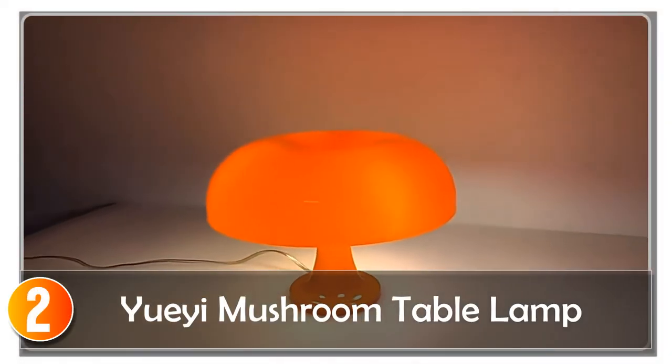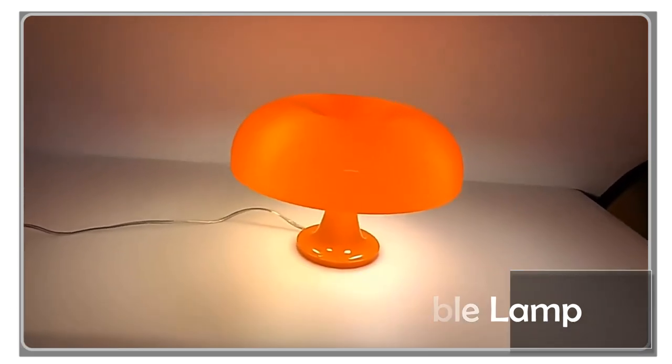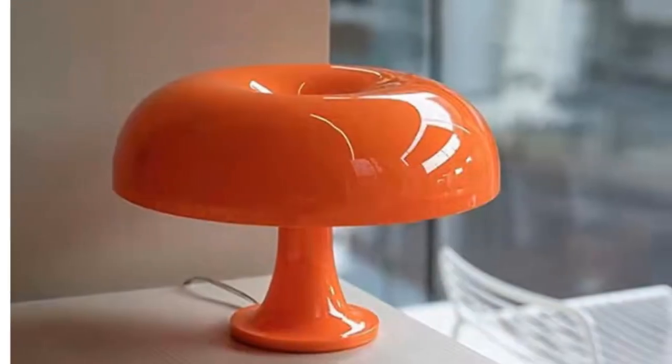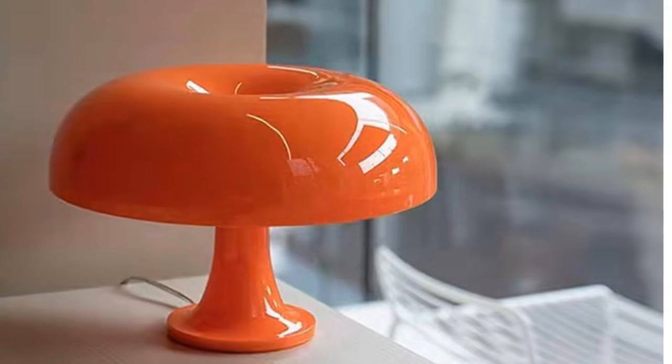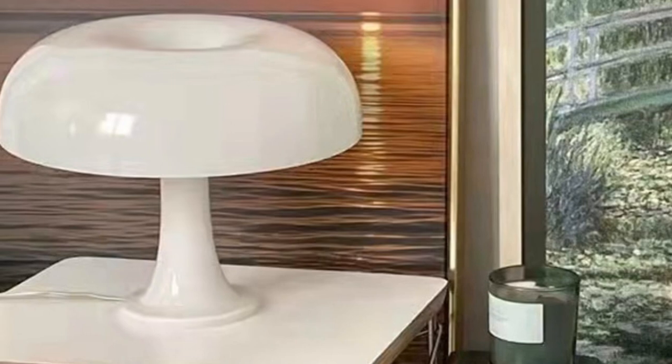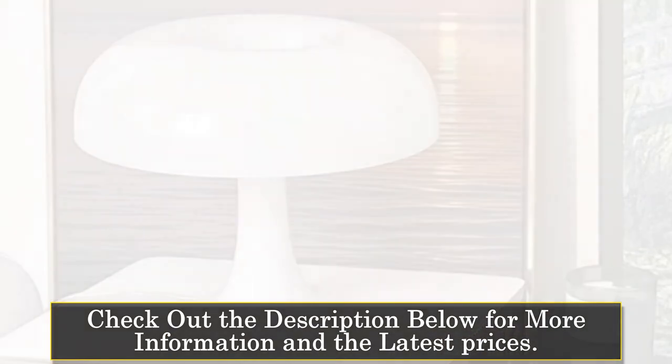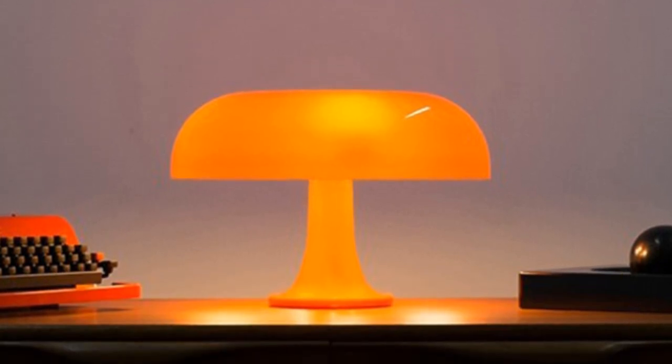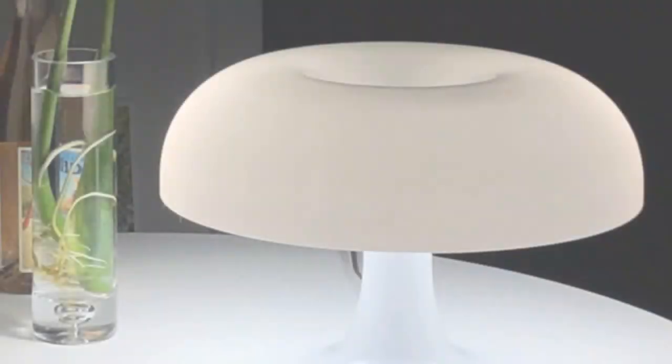At number 2, the UE Mushroom Table Lamp is a modern and minimalist lighting option that adds a touch of elegance to any bedroom, living room, or bedside setting. Designed by an Italian designer, this table lamp showcases a unique mushroom-inspired design that enhances the overall aesthetic of the room. Crafted from high-quality PVC and acrylic materials, the UE Mushroom Table Lamp offers durability and a smooth finish. Its sensor switch allows for easy control and adds to the minimalist design.